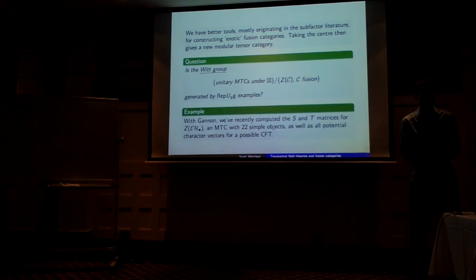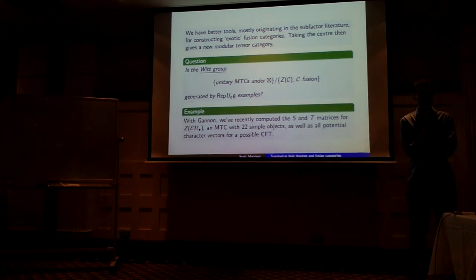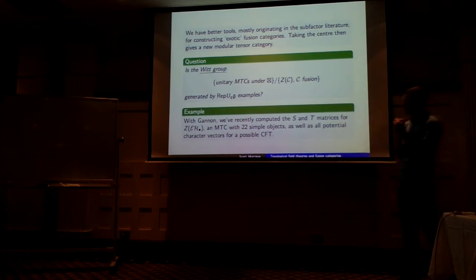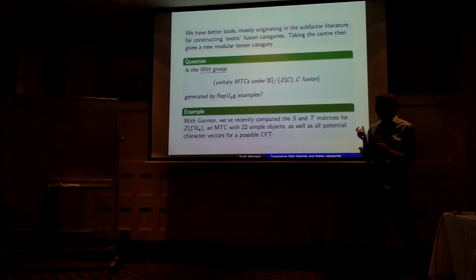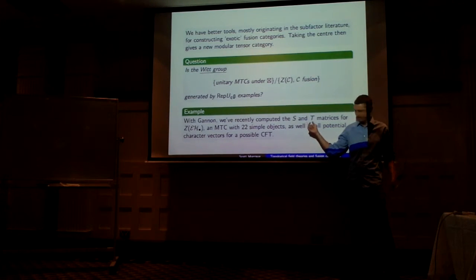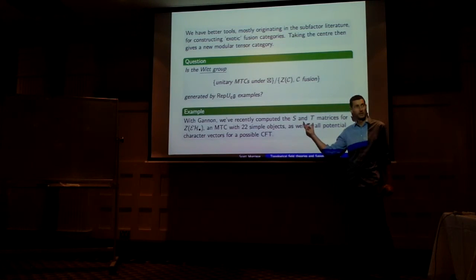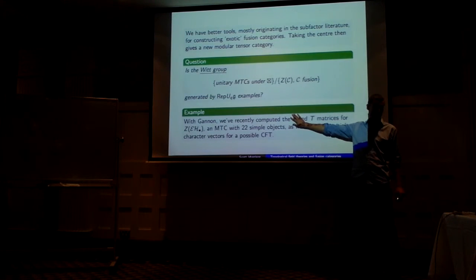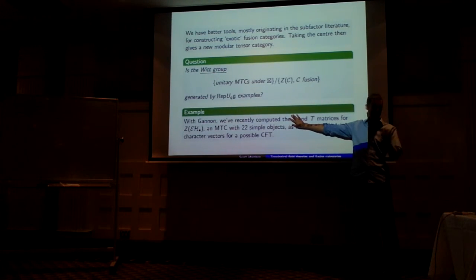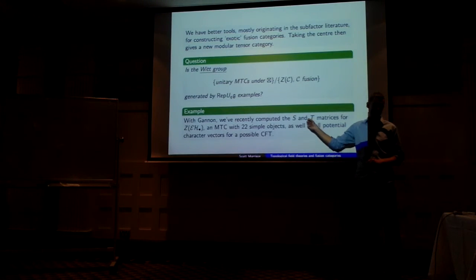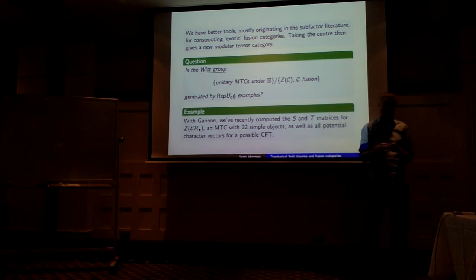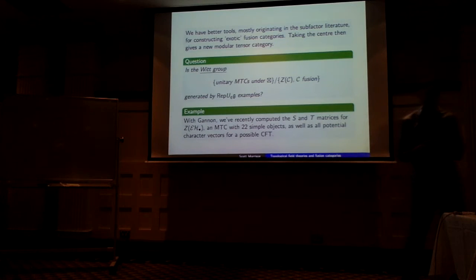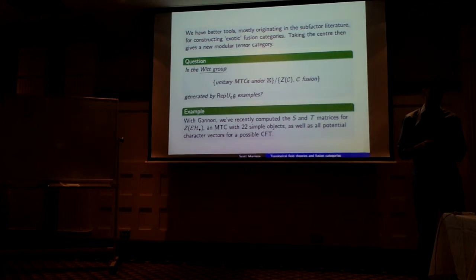A few years ago people were conjecturing whether all modular tensor categories were characterized by their S and T matrices. That's still open. Very recently, Eric Rowell and some others discovered examples of modular categories with the same T-matrix, so it's no longer a conjecture that even the T-matrix determines the category. We now know there exist modular categories with the same T-matrix, but S and T together are apparently a convenient invariant — although it's unclear how strong they are.